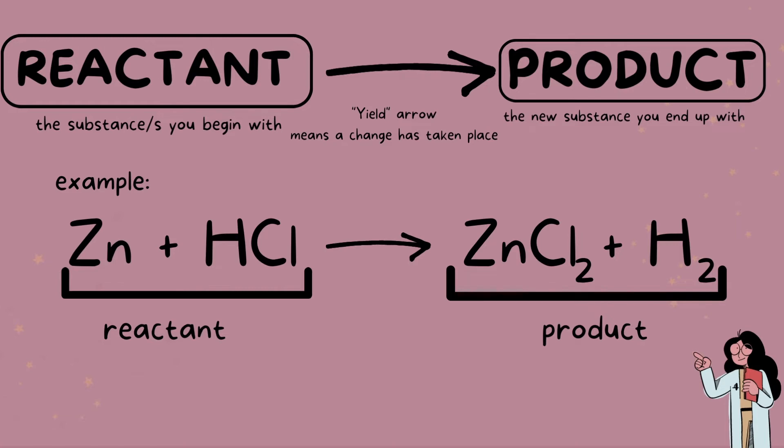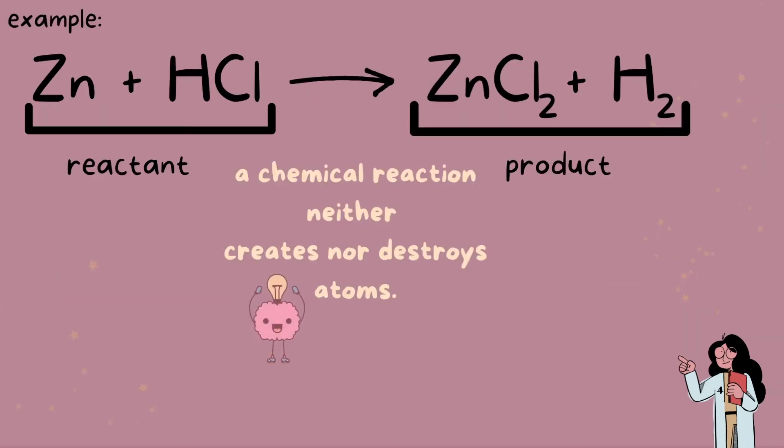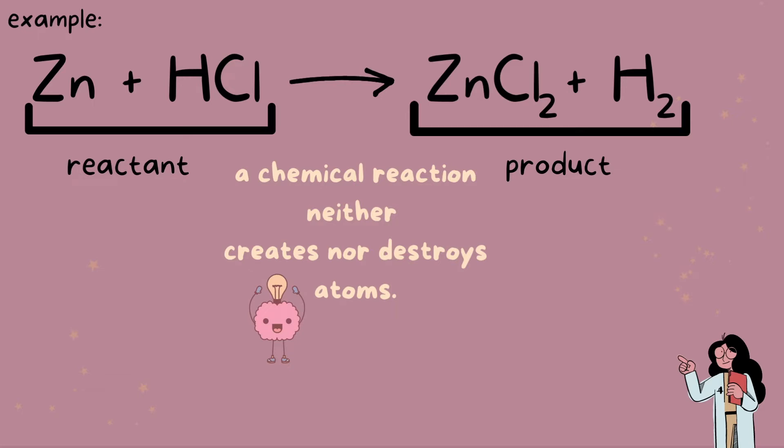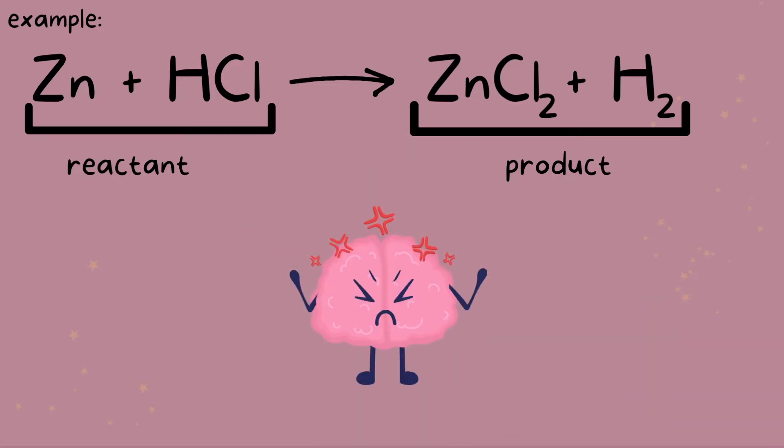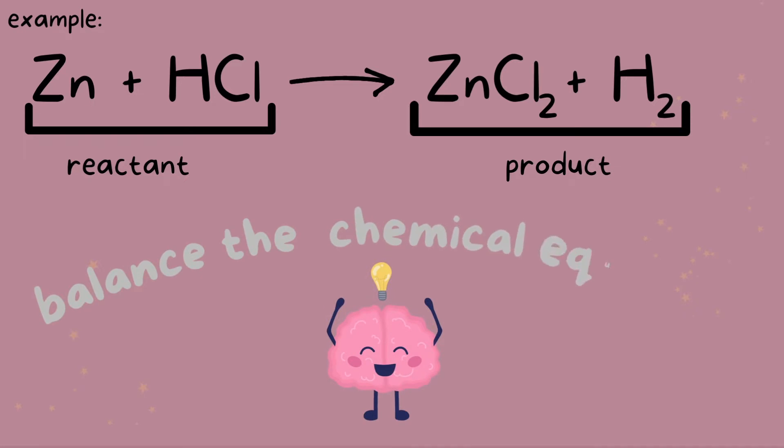Remember, atoms are neither created nor destroyed according to the law of conservation of mass. So the number of atoms for each element must be the same on both sides of the equation. But they're not right now. So what can we do? Well, we can balance this chemical equation out.